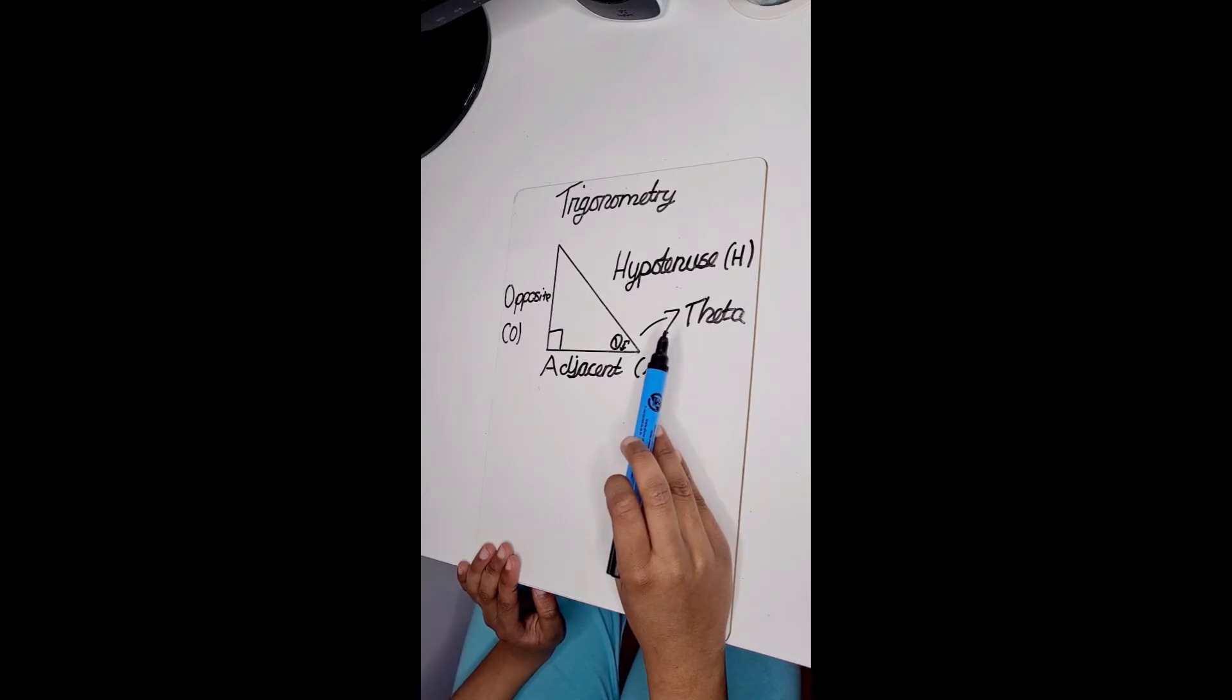The main functions in trigonometry are sine, cosine, tangent. They are often abbreviated to sin, cos and tan for any angle theta.